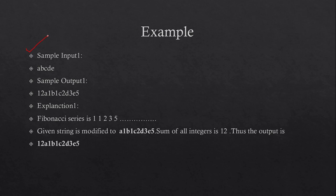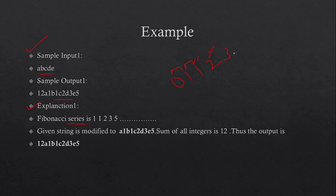This is our first input — this is our input string. Let's see the explanation. This is your Fibonacci series. If you remember, the Fibonacci series is where the third number is the summation of the first two numbers: zero, then one, one, two — here two is the summation of the first two numbers. Then you get three because one plus two equals three, then five. This is the Fibonacci series.